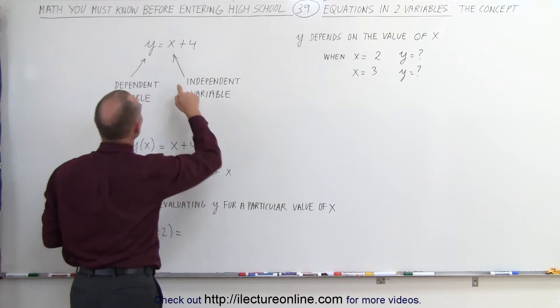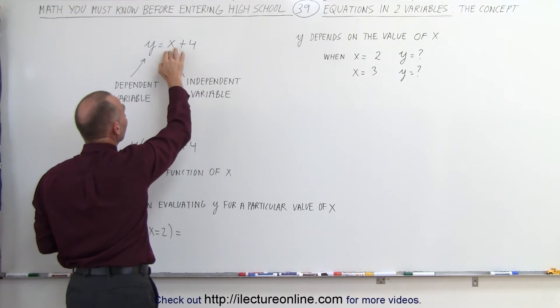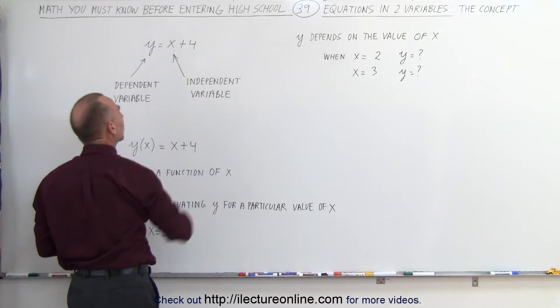So when we have an equation like this, y equals x plus 4, and we want to let x be a certain value, then we replace x by that value and calculate what y is equal to.